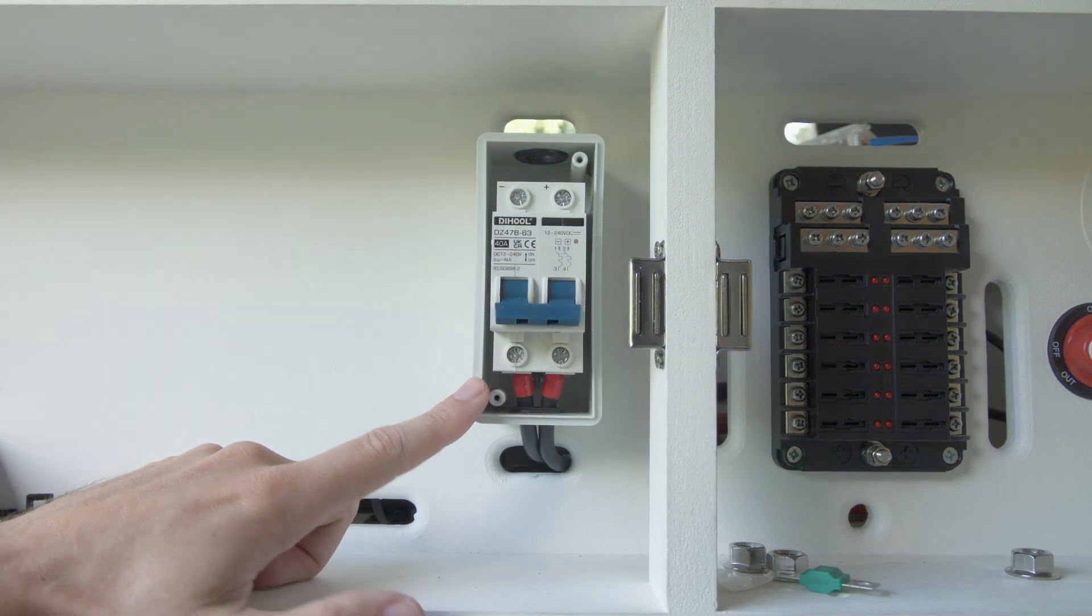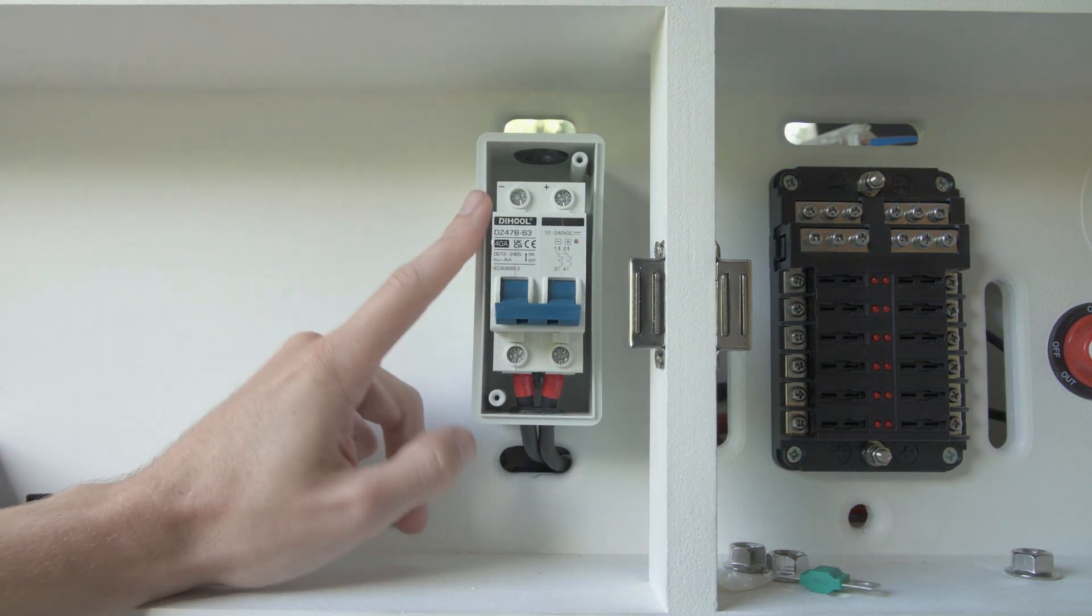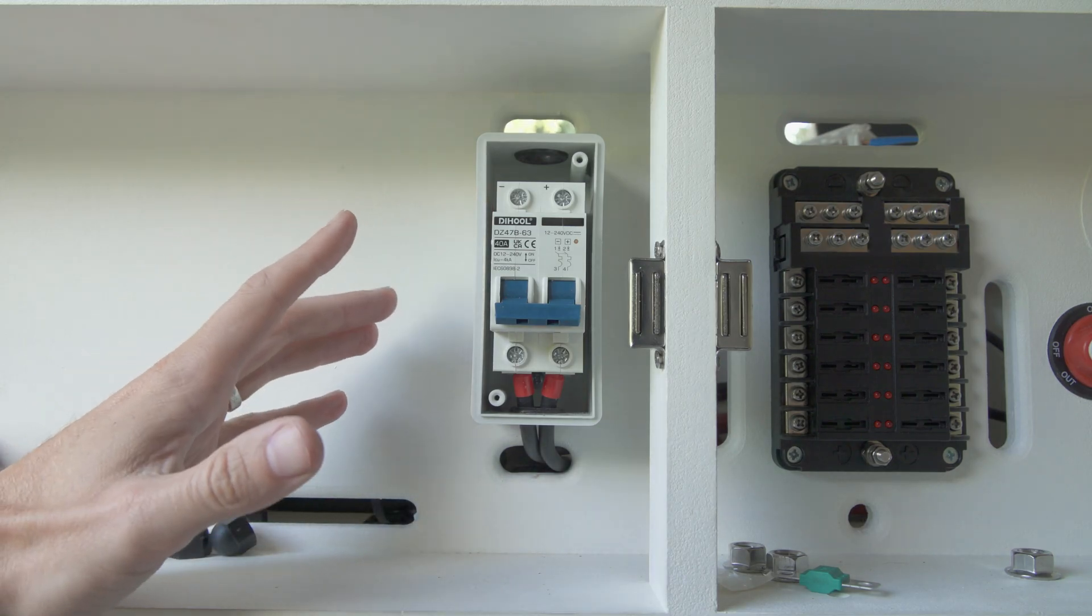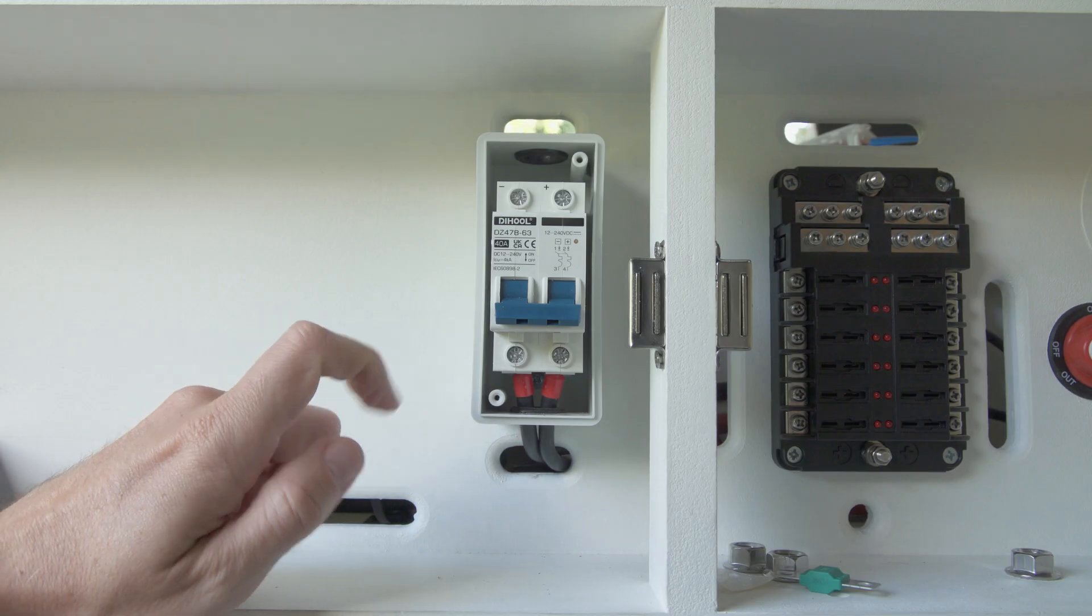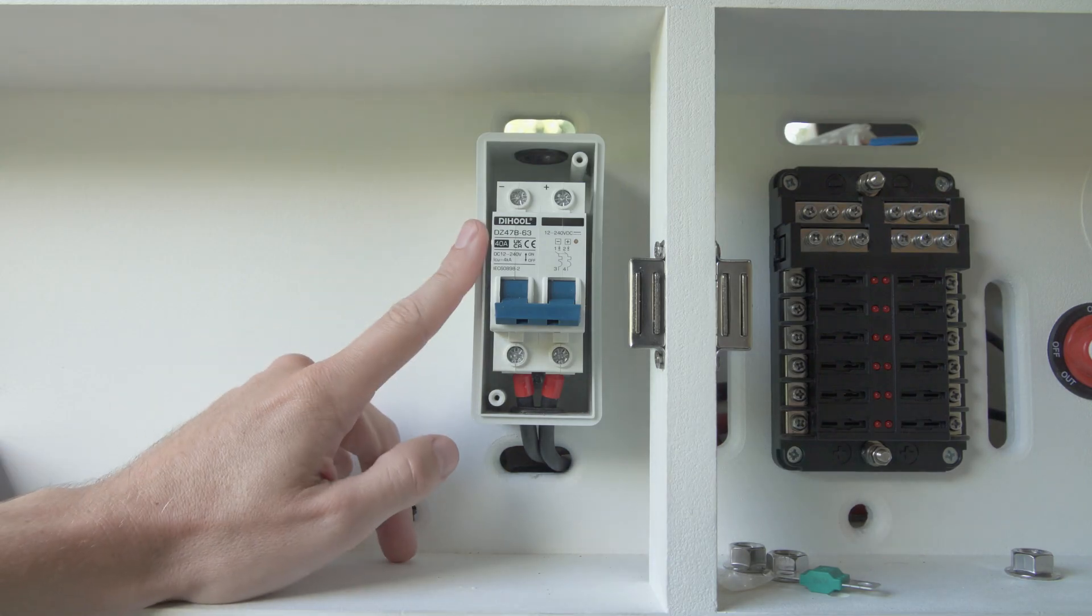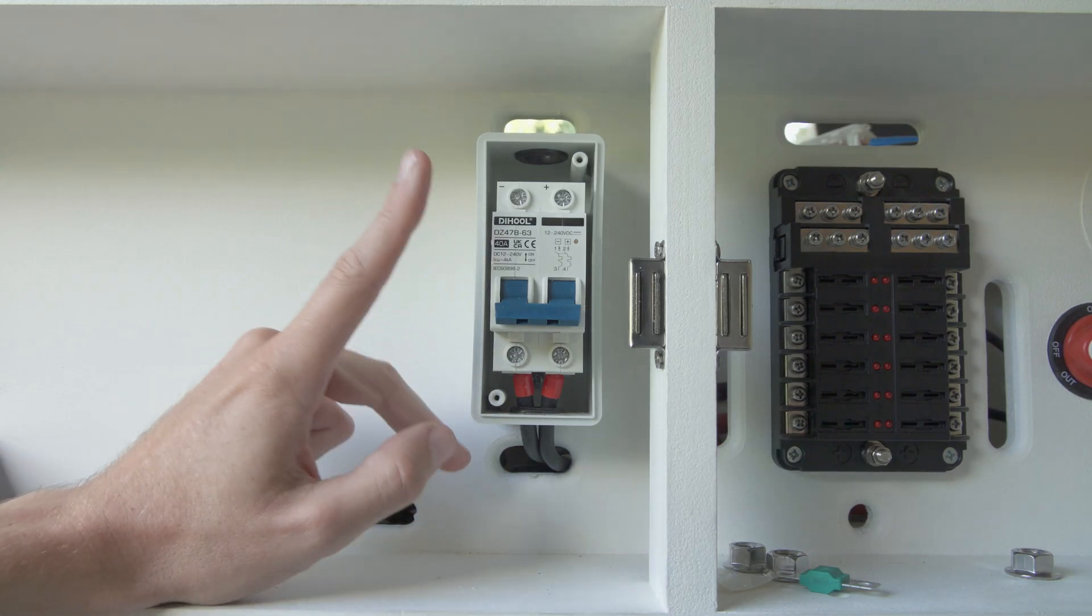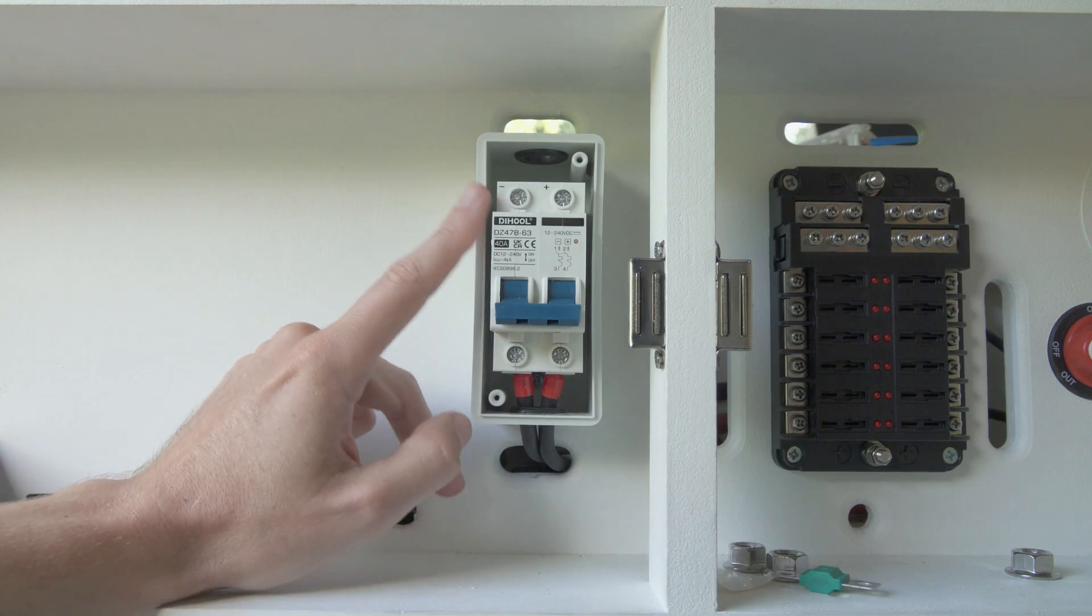So I've connected the output side. The input side is coming directly from the solar panels and of course because it's light outside at the moment there is going to be power running through those. So if I touch those cables at this point I'll get a little bit of a shock, so I either need to wait until it's nighttime and there's no light on them or I need to cover the solar panels before I can work on the input side.